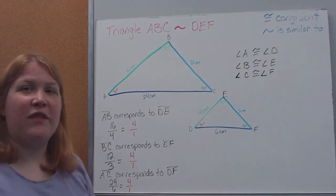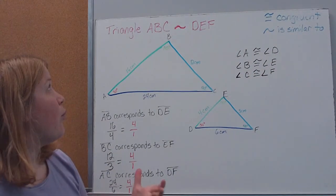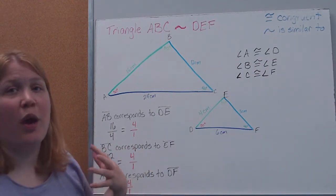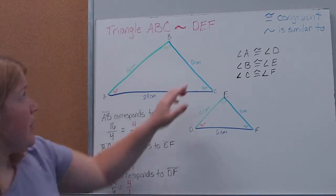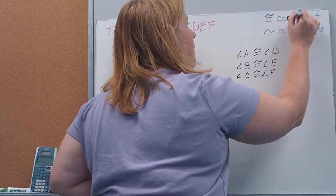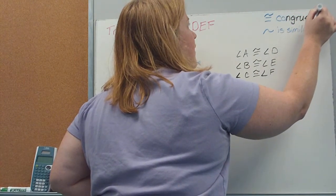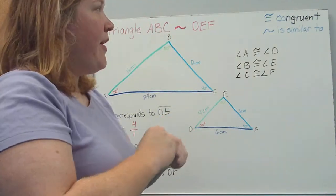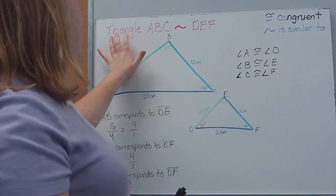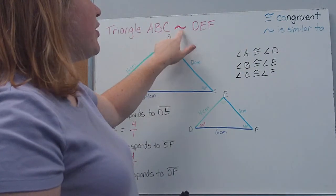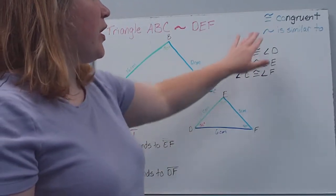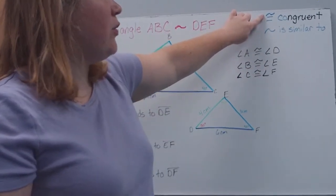So here I just wanted to give you an example of what similar figures would look like. I have two similar figures — that's what this little sign here means. If we just have this little tilde, that means that they're similar. So up here I'm telling you triangle ADC is similar to triangle DEF, which means they have corresponding sides and corresponding angles.